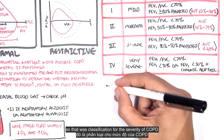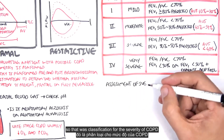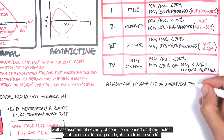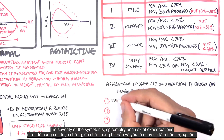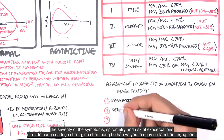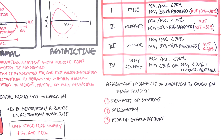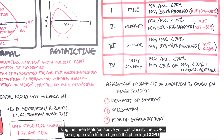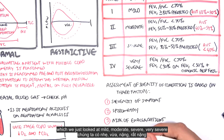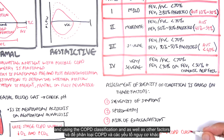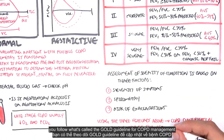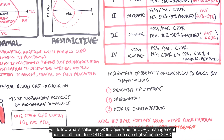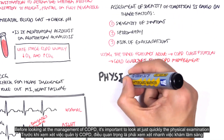Assessment of severity is based on three factors: the severity of the symptoms, spirometry, and risk of exacerbations. Using these three features, you classify the COPD — mild, moderate, severe, or very severe — and using the COPD classification and other factors you follow the GOLD guidelines for COPD management.